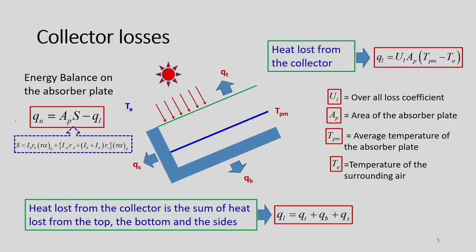As we understood in the previous classes, the energy balance on the absorber plate can be expressed as: Ku equals Ap into S minus QL. Ku is the useful heat gain, Ap is the collector or absorber area, and S is the flux received by the absorber plate. S is a function of many parameters: Ib·Rb multiplied by tau·alpha for beam radiation, plus Id·Rd plus Id, plus Ib·Rr, all multiplied by tau·alpha for diffuse radiation. We have already understood how to calculate tau·alpha for beam and diffuse radiation, so this part is now known to us.